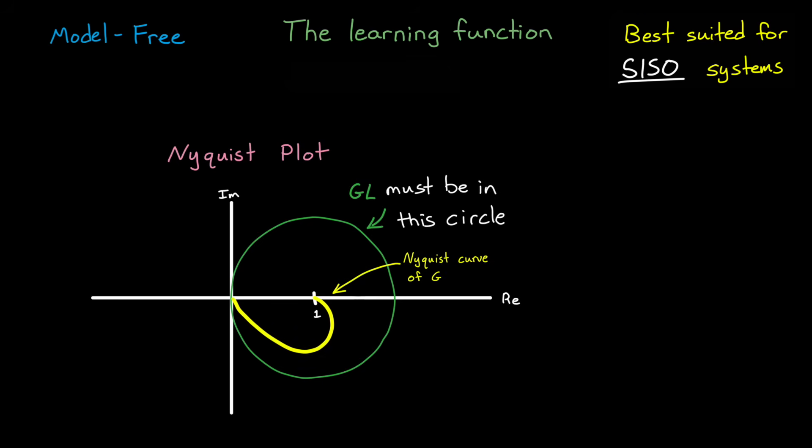For example, let's assume that g is some first order process that produces this Nyquist curve. In this case, the Nyquist curve of g by itself stays within the learning circle. So l could just be 1.